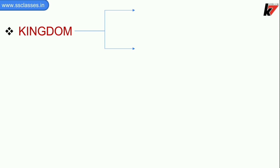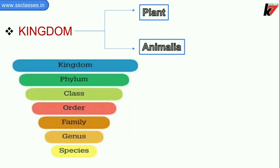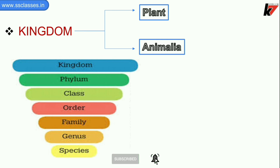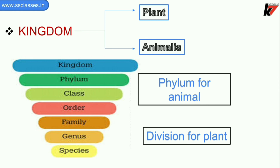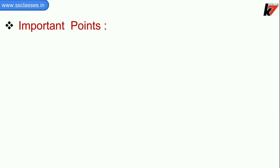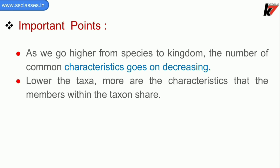Kingdom is the biggest taxon of taxonomic category, in which we have the plant kingdom and the animal kingdom. The taxonomic category arrangement goes from species as the smallest taxon to kingdom as the largest taxon. As we go from species to kingdom, the number of common characteristics goes on decreasing. Lower the taxon, more are the characteristics that the members within the taxon share.